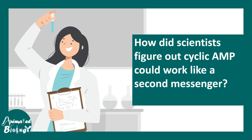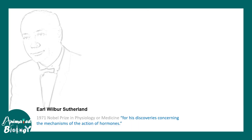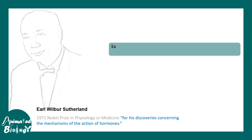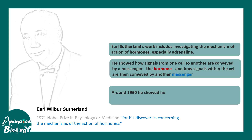How did scientists figure out that cyclic AMP could work like a second messenger? This all came to light from the work of Earl Sutherland, who won the 1971 Nobel Prize in Physiology and Medicine for his discoveries showing how hormones actually work. He is also considered the father of endocrinology.